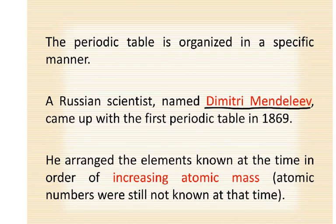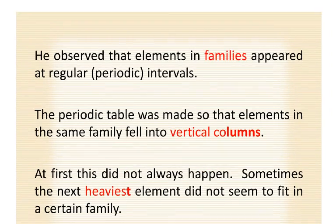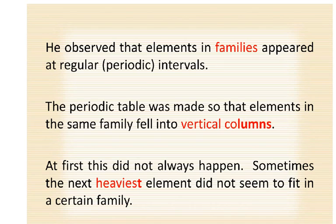He arranged the elements known at the time in order of increasing atomic mass. Atomic numbers were still not known at that time, so they didn't know anything about protons or neutrons — they just knew atomic masses. He observed that elements in families, which on our periodic table are the columns that go up and down, appeared at regular periodic intervals. So the periodic table was made so that elements in the same family fell into vertical columns.